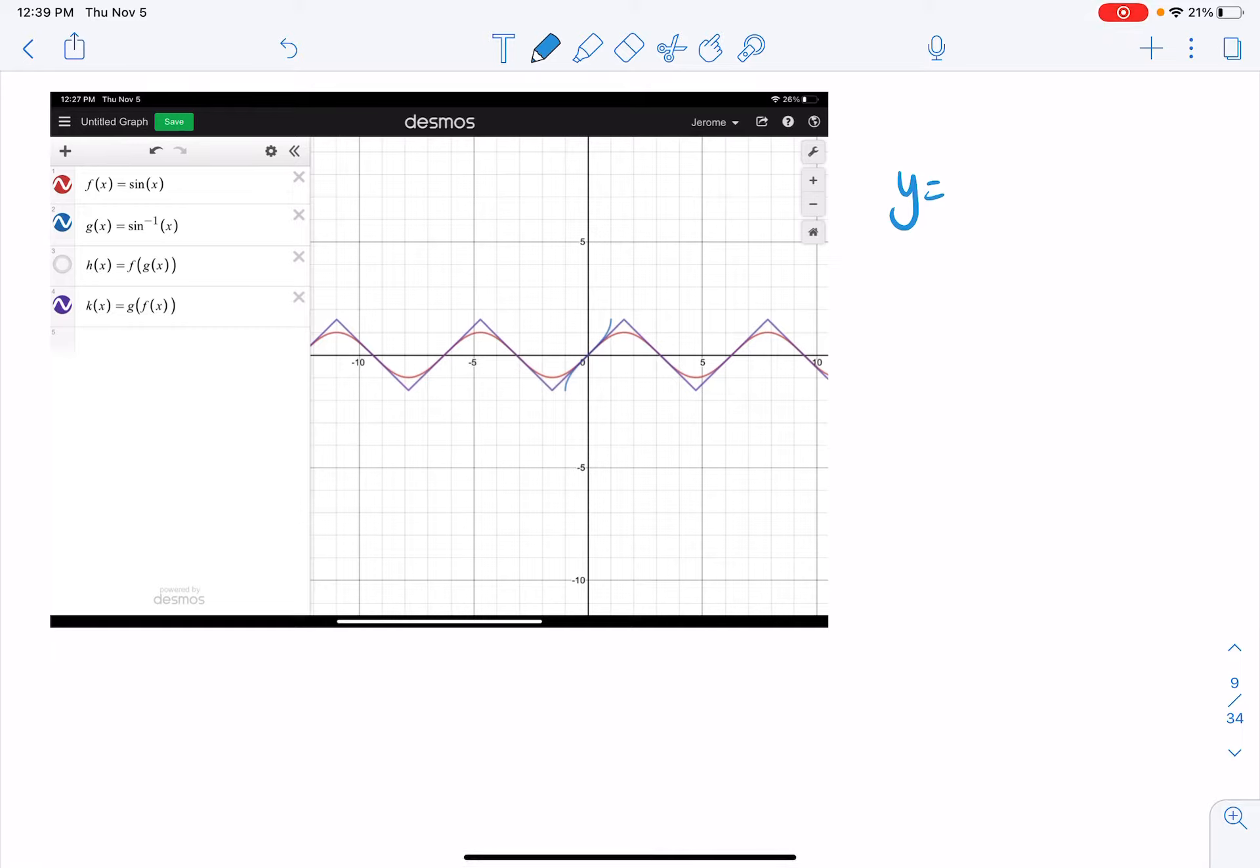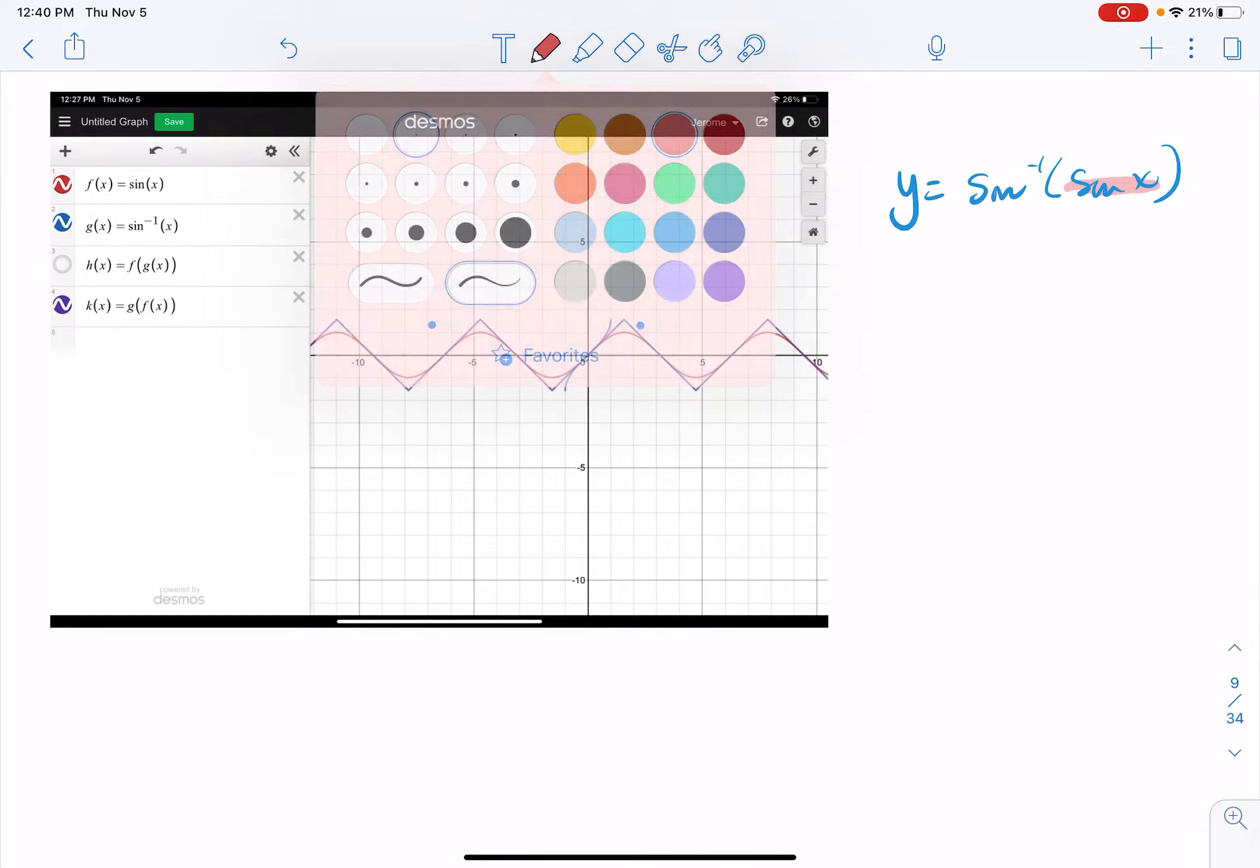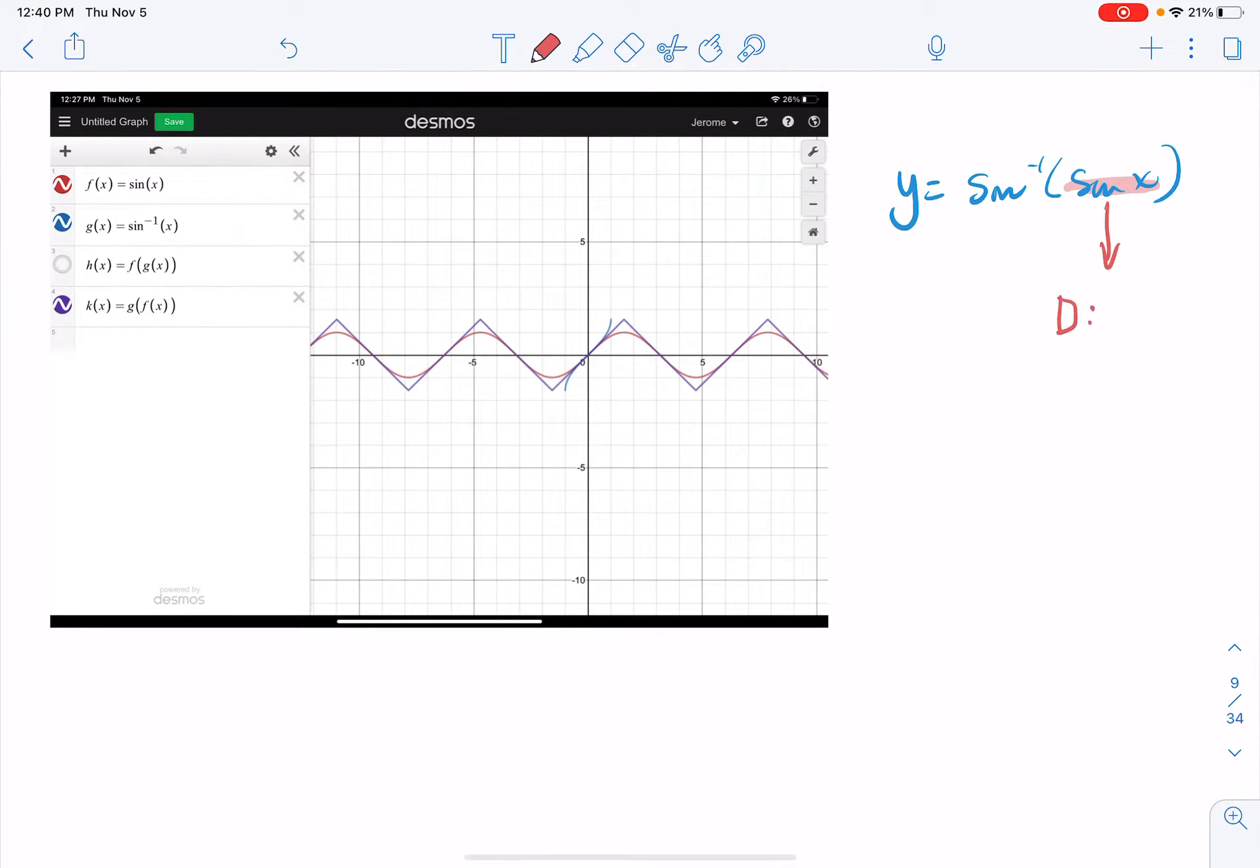This that we just graphed here was inverse sine on the outside, so inverse sine of the sine of x. Let's dissect this just a little bit. The first part of this that is supposed to be computed is the sine x. That's where the original input is going to live, which means, here, let me highlight this and say that its domain is what?